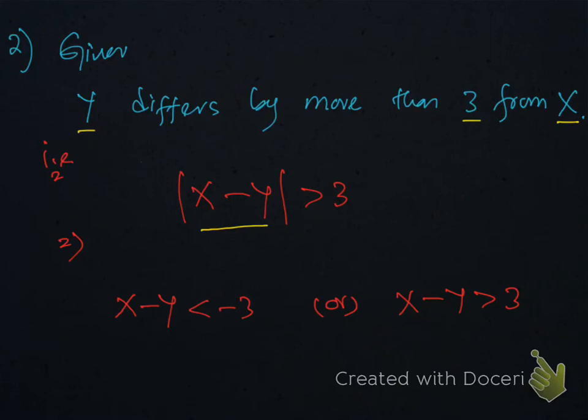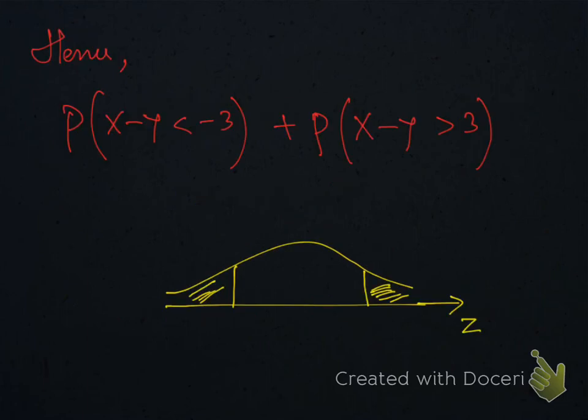Example number 2: It is given that quantity y differs by more than 3 from x. So |x - y| > 3 (differs means modulus). The solution of this inequality will be x - y < -3 or x - y > 3. This is the way to solve this question, and these are the required areas.